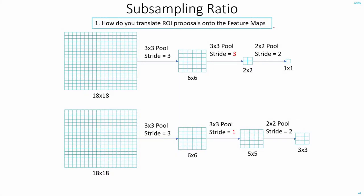To understand how we can translate the ROI proposals onto the feature maps, let's first understand the concept of subsampling ratio.